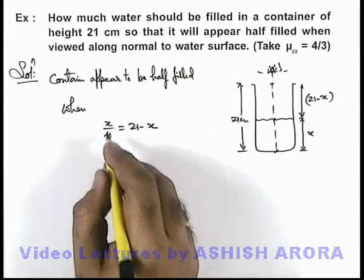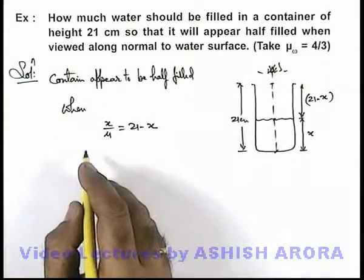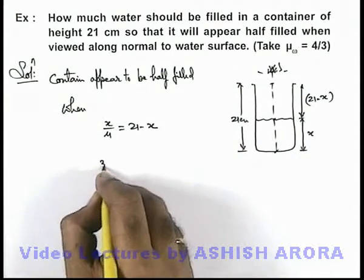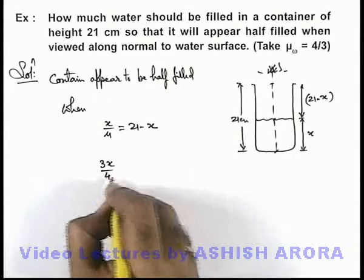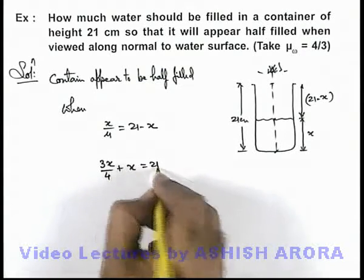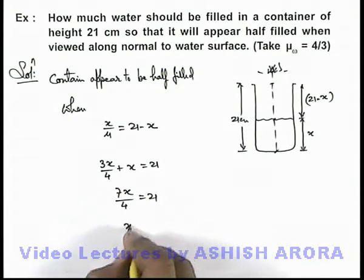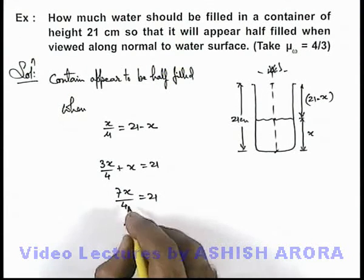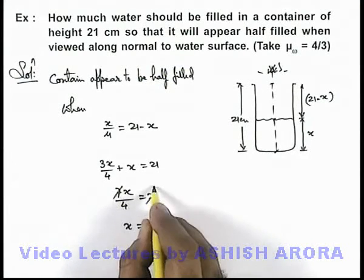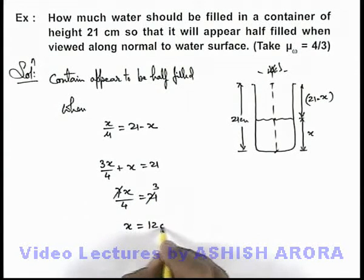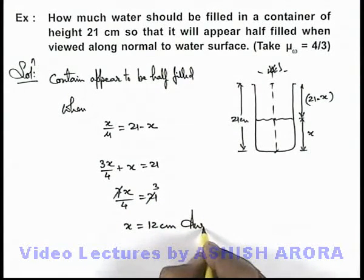So on simplifying this relation, we consider water's refractive index to be 4 by 3, so this is 3x by 4 plus x should be equal to 21. That'll be 7x by 4 is equal to 21, and the value of x we are getting will be, we can cancel out 7 with 3, so this will be 12 centimeters. That'll be the answer to this problem.